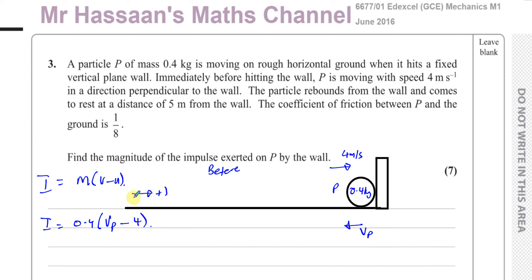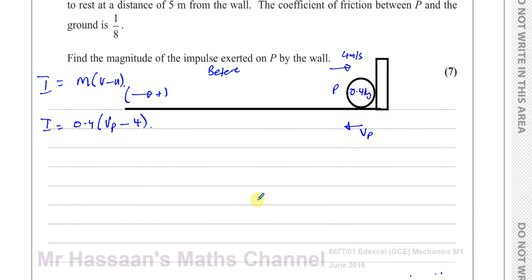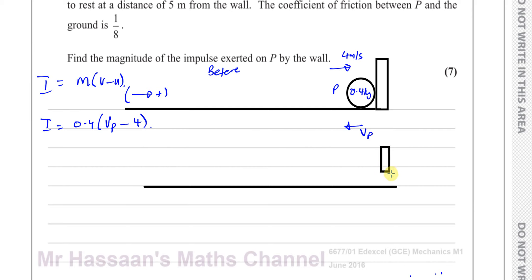I'm taking the initial direction as positive, so the rebound velocity vp will be negative. We don't know vp from the question directly, but they've given us information to work it out: the particle rebounds and comes to rest 5 meters from the wall. So I'll draw a new separate diagram to analyse what happens after it hits the wall.